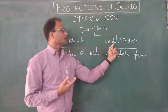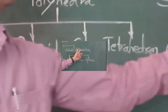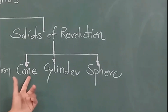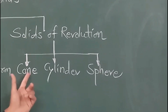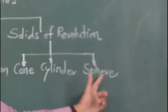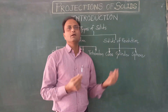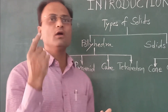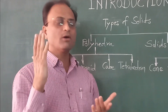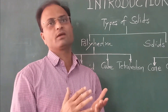The second category is solids of revolution. Under solids of revolution there is cone, cylinder, and sphere. All these solids are obtained by revolving a plane surface about a fixed edge or axis.